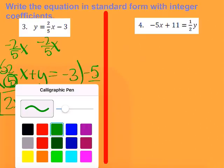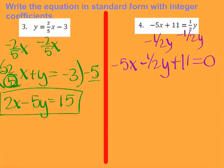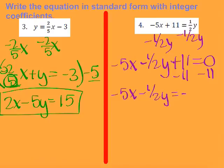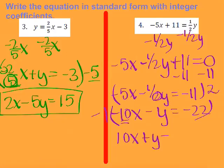Now let's take a look at number 4. I want to get my Y over to the other side, so I get negative 5X minus 1 half Y plus 11 equals 0. I subtract 11 to the other side and get negative 5X minus 1 half Y equals negative 11. I need integer coefficients, so since I'm dividing by 2, I multiply everything by 2. I get negative 10X, and negative 1 half times 2 is negative Y. Negative 11 times 2 is negative 22. Again, the X coefficient is negative, so I multiply everything by negative 1 to fix that. Then I get 10X plus Y equals 22.